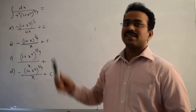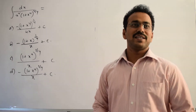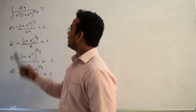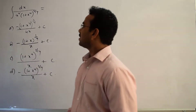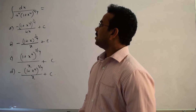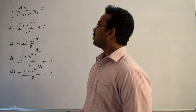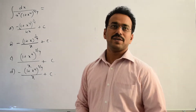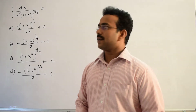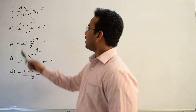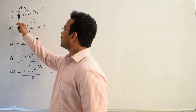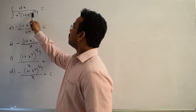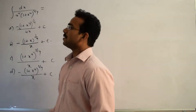Let's discuss the solution of the given integral. The given integral is ∫ dx / [x² · (1 + x⁴)^(3/4)]. The integrand is 1 / [x² · (1 + x⁴)^(3/4)].